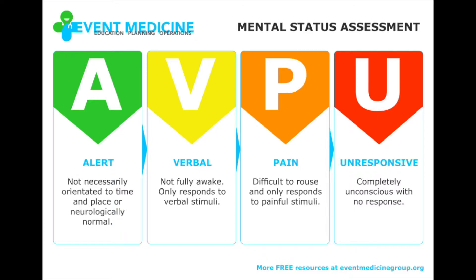The next three parts of the AVPU scale determine the level of consciousness of an unawake person. V stands for verbal, which means the patient responds to verbal stimuli. If a patient opens their eyes, talks back, or moves when their name is called or someone talks to them, they are rated a V on the AVPU scale.